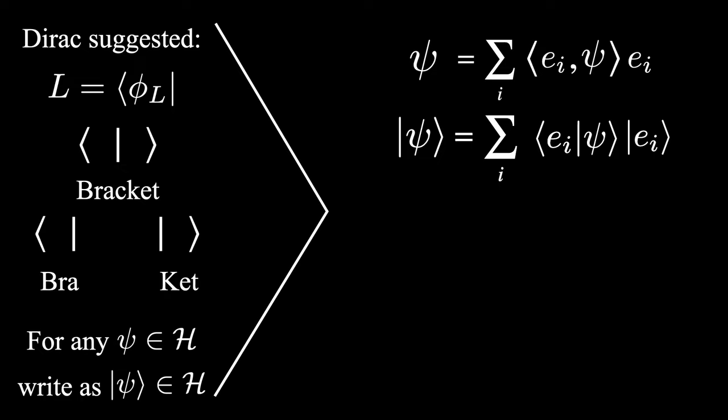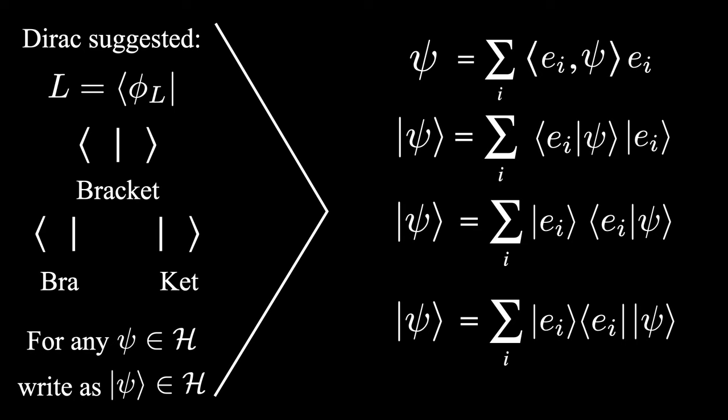Now since the inner product is just a complex number, we can move it to the right. Here is where Bra-Ket notation will prove to be useful. In this notation, we can consider inner products as equivalent to a bra acting on a ket. So we can split apart the inner product and write it like this instead.